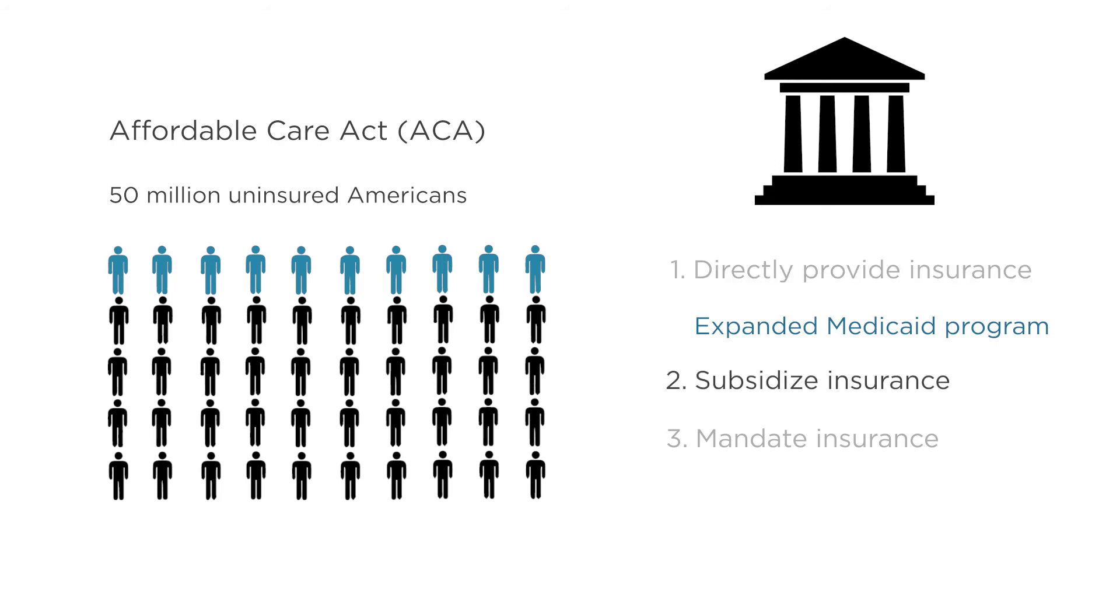Second, it subsidized the purchase of insurance. The ACA set up new tax credits for those who buy health insurance on their own. For individuals who are low income and buy private insurance, the government pays a large share of the cost of the plan. In 2015, 9 million people were taking advantage of these new subsidies.